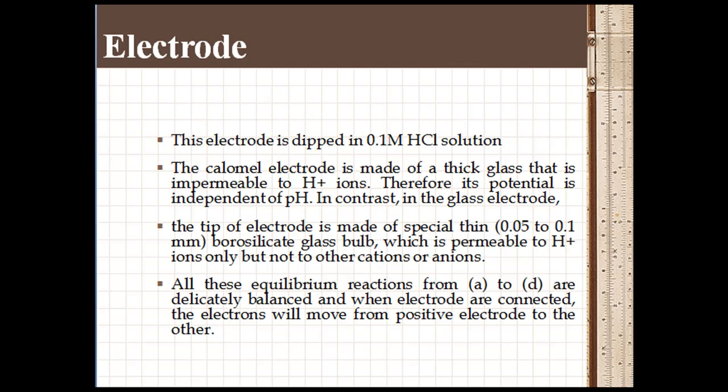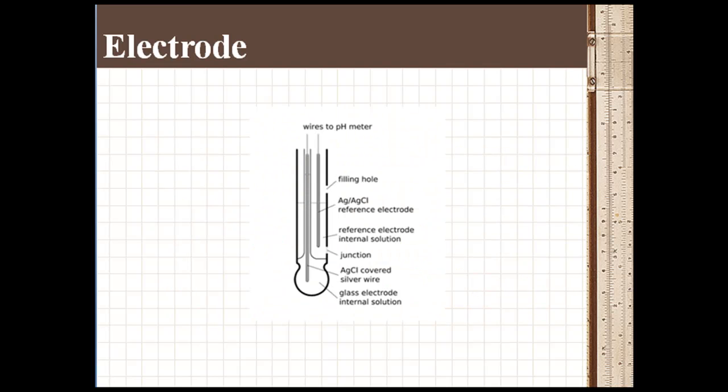All these equilibrium reactions are delicately balanced, and when electrodes are connected, electrons will move from one electrode to the other. If the electrodes are placed in a solution containing high concentration of hydrogen ions, the KCl electrode will not respond as it is not permeable to hydrogen ions. The hydrogen ions pass through the glass membrane and neutralize electrons of the electrode reaction, and hence electrons flow from the KCl out to glass. When the test solution has high concentration of hydroxide ions (high pH), hydrogen ions move out of the glass bulb rendering a momentary negative charge, and hence electrons flow from glass to KCl.